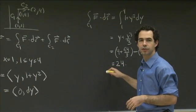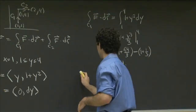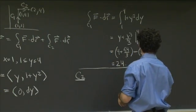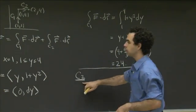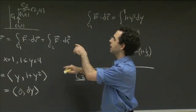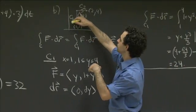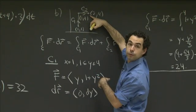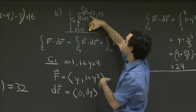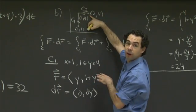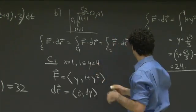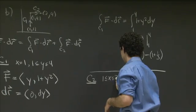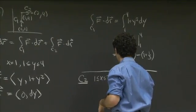Evaluating: this equals y plus y cubed over 3, between 1 and 4. That gives (4 plus 64/3) minus (1 plus 1/3), which works out to 24. So we get 24 for the first part. Now for C2: it's the segment connecting (1,4) to (2,4). On this curve, y is always 4 and x goes from 1 to 2.